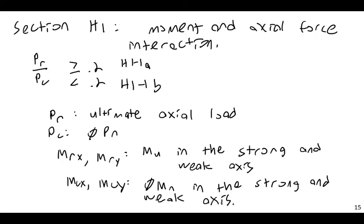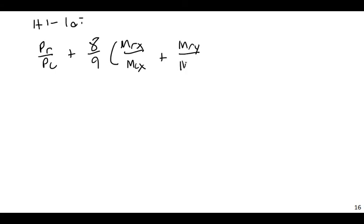So really, there's three layers of interaction here. We have both axial force and moment, but we also need to consider both strong and weak axis bending. And then the equations are fairly straightforward. PR over PC plus 8 ninths times MRX over MCX plus MRY over MCY must be less than or equal to 1.0.